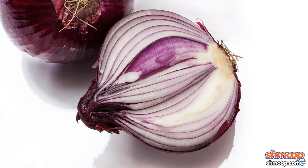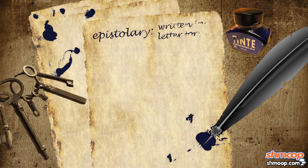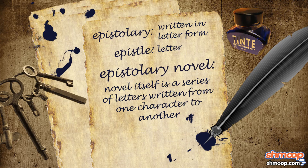The narrative structure of Frankenstein is incredibly complicated — it's part of why it's so fun to read. First, let's talk about why it's written in the form of letters. Any novel written in letter form is called an epistolary novel. The word 'epistle' just means letter — it's a fancy word for saying letter.